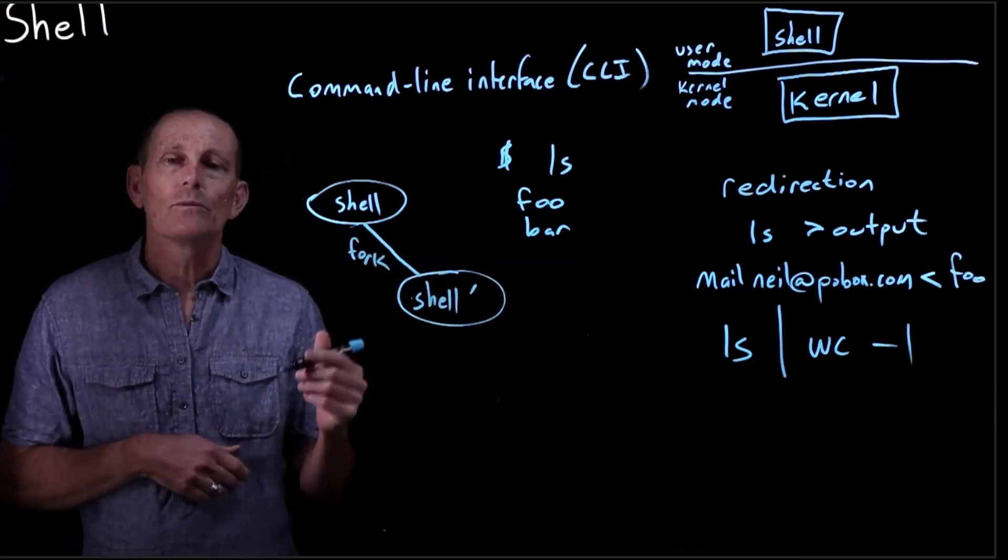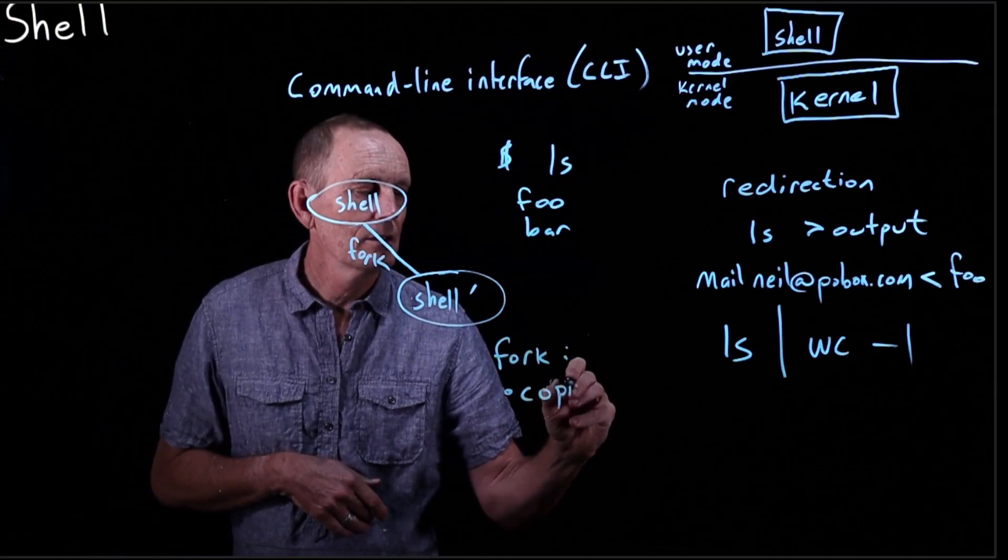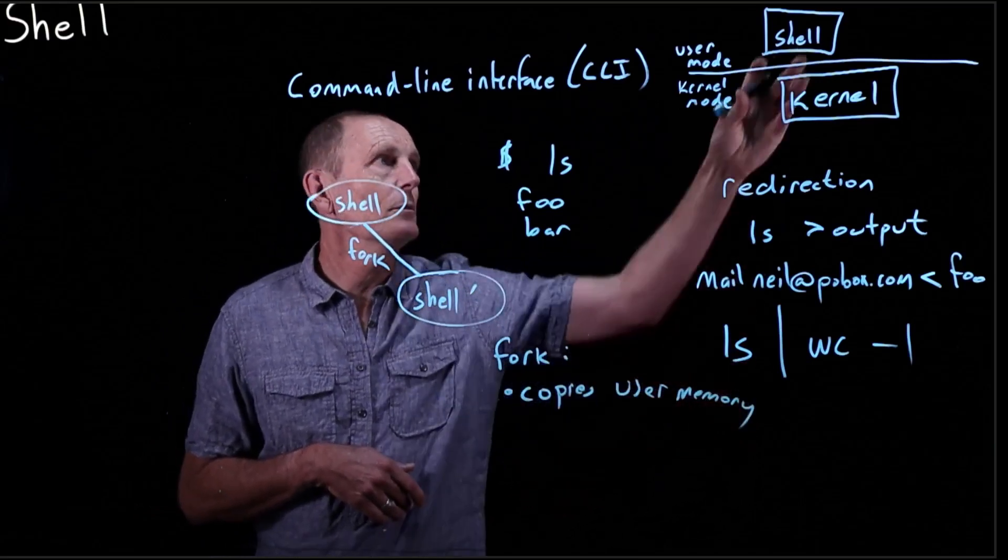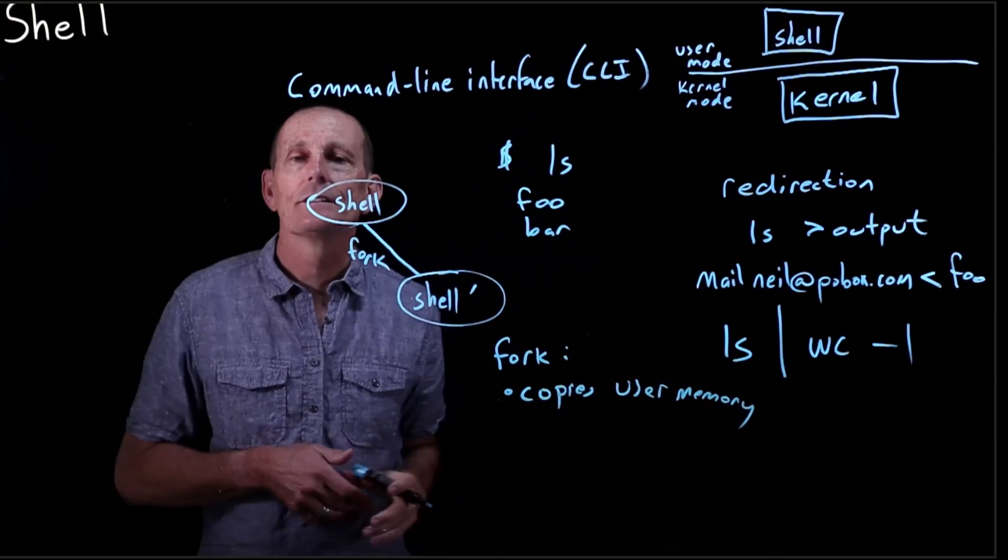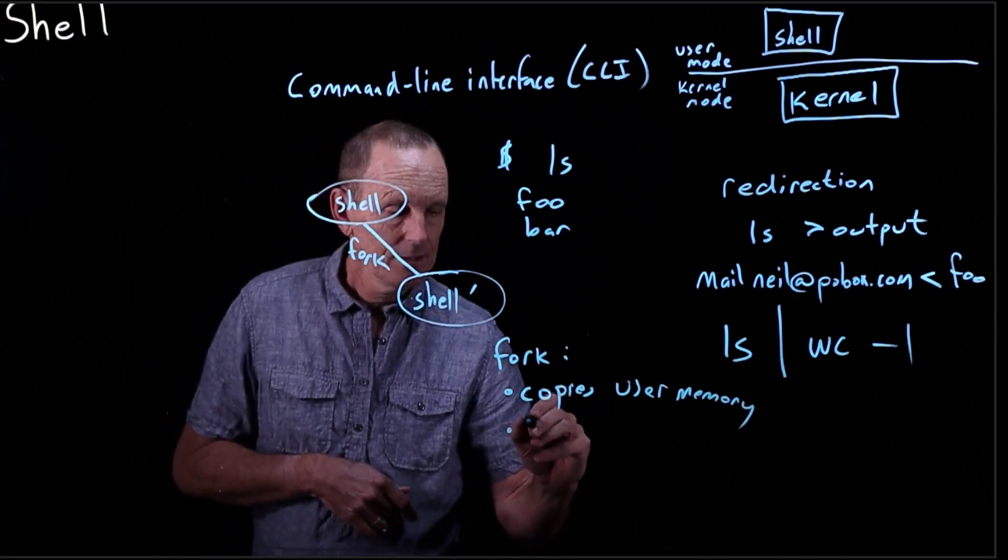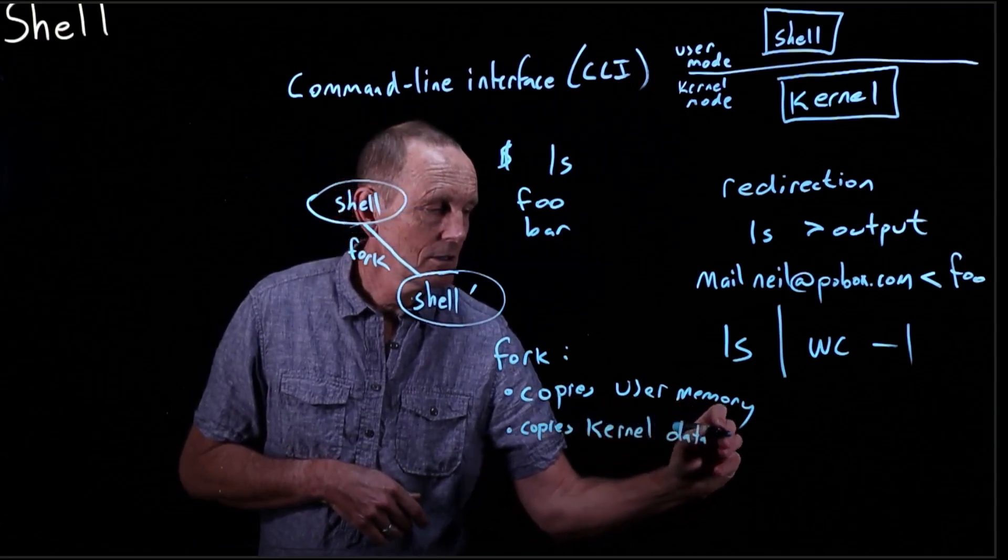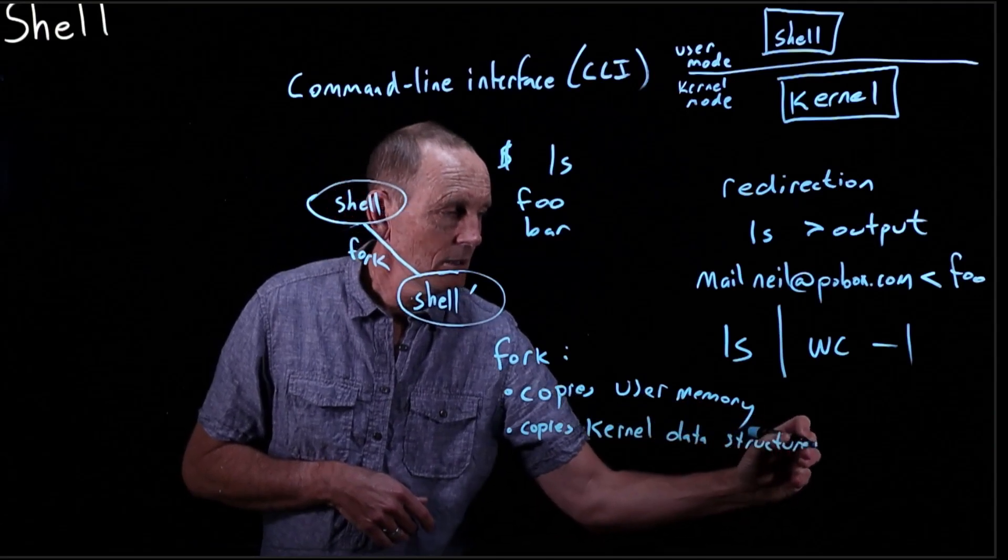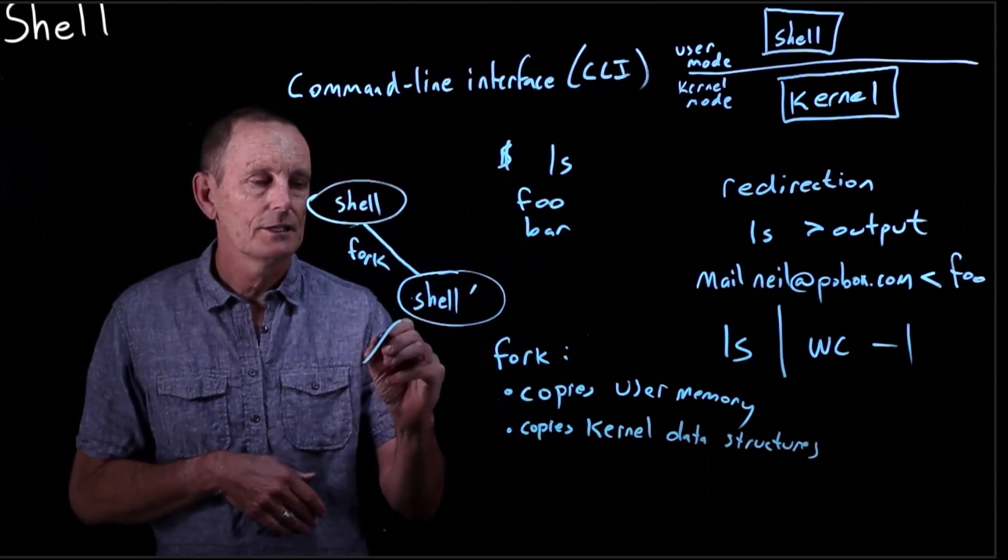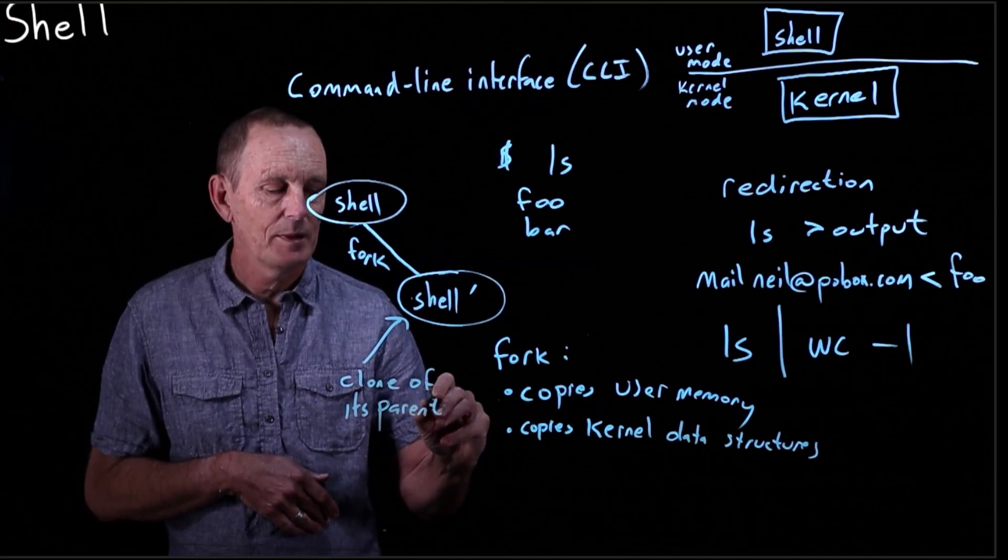And then what does it do? So fork copies the user memory. By user here, I mean the program. So it makes an entire copy of the contents of that. So all globals, the stack, everything else. It copies kernel data structures. Things like which files are open and so on. So the child is a clone of its parent.